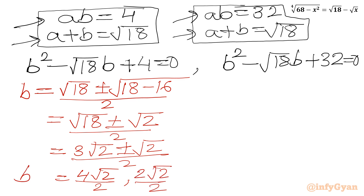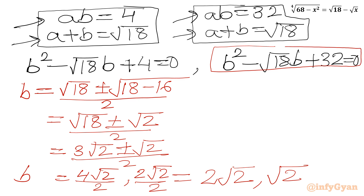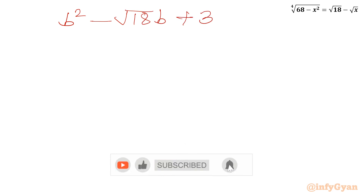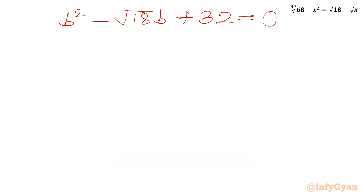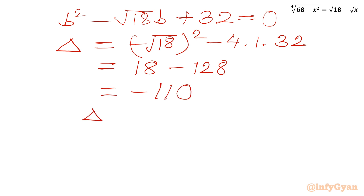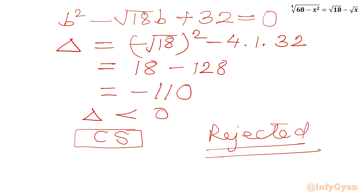This gives two values of b: with the plus sign, 4 root 2 over 2 equals 2 root 2; with the minus sign, 2 root 2 over 2 equals root 2. For the second quadratic, checking the discriminant: 18 minus 4 times 32 equals 18 minus 128 equals negative 110. Since the discriminant is negative, we get complex solutions, so we reject this quadratic as we are looking for real solutions. The accepted b values are b equal to root 2 and 2 root 2.